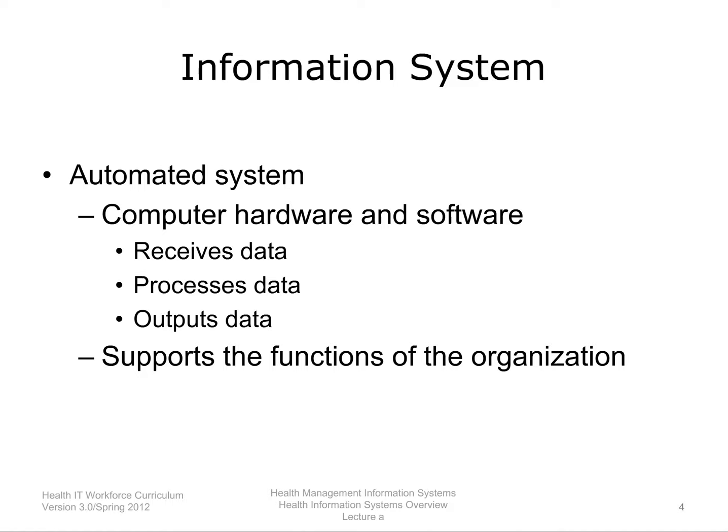Let's begin with the definition of an information system. The American Health Information Management Association, AHIMA, defines an information system as an automated system that uses computer hardware and software to record, manipulate, store, recover, and disseminate data — that is, a system that receives and processes input and provides output. AHIMA 2012, page 181.